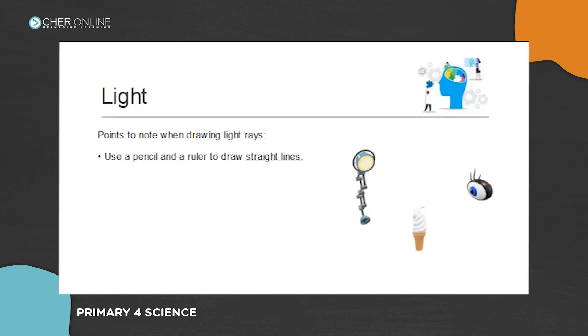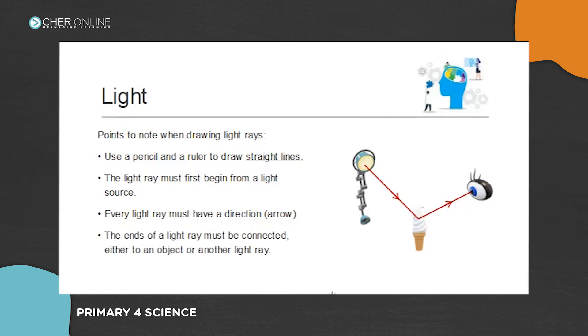Let's look at this. Use a pencil and a ruler to draw straight lines to show the path of light. For this one, it's not your practice, so I shall show you how they do it. So the light rays must first begin from the light source. Don't forget, every light ray must have a direction arrow. You don't have to draw a lot. You just need to draw one in the middle and then one pointing towards the eyes. It's better to draw in the middle than right at the end, because sometimes when you draw right at the end, it actually goes into the picture and sometimes the arrow disappears or cannot be seen clearly. So the end of the light ray must connect either to an object or another light ray. Do note that these two lines must be joined. Can you see? These two lines must be joined. If not, your teacher will penalize you. This is wrong.